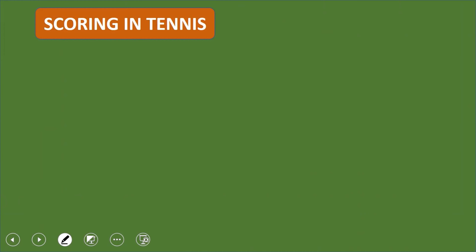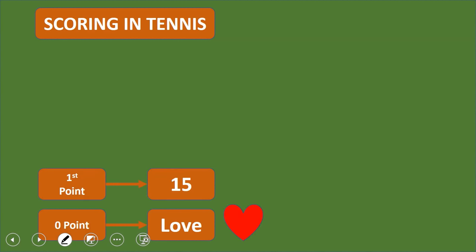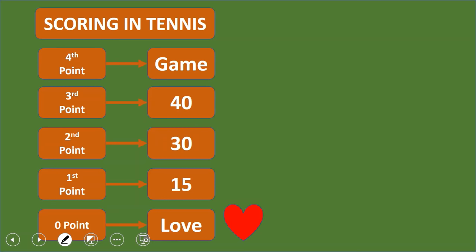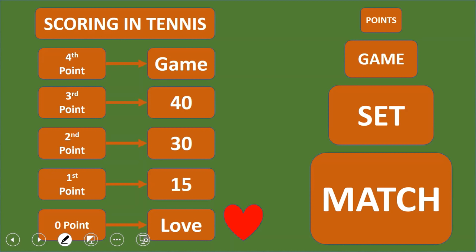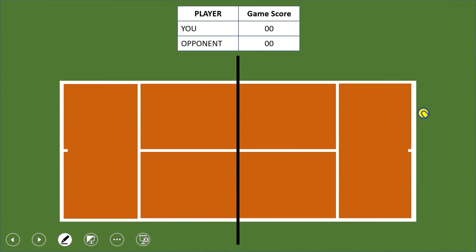Now let's talk about scoring. Tennis starts at zero-zero, but in tennis zero is called 'love,' so you say 'love all.' When you win the first point it's 15, the second is 30, the third is 40, and winning the fourth point means you've won the game. You need four points to win a game, six games to win a set, and two sets to win a match.